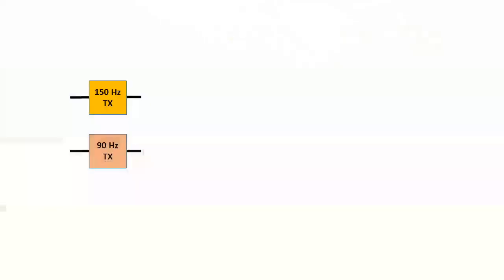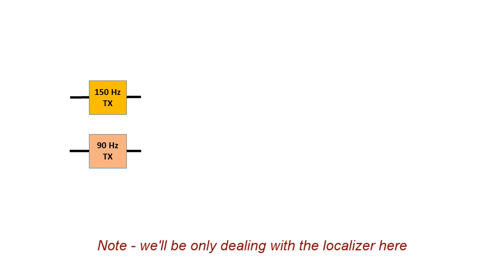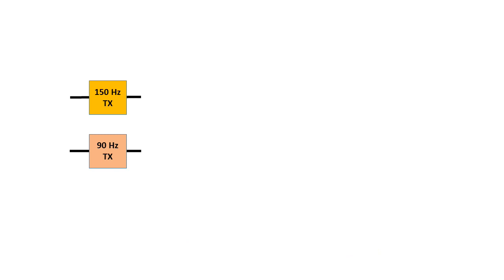First let's have a look at a conceptual model of a localiser system. This shows what result we're trying to get, but it won't be a practical system. Two VHF AM transmitters operating around 110 MHz are provided — one modulated with a 150 Hz sinusoidal tone, the other with a 90 Hz tone. Both transmitters use the same radio frequency source, which could be a low frequency crystal oscillator followed by frequency multiplying stages to reach the very high frequency used.